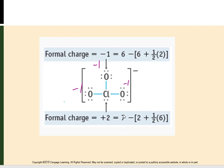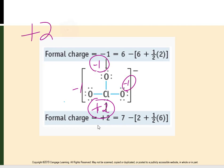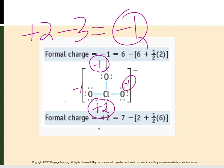Now for chlorine: 7 valence electrons minus 2 lone pair electrons, plus half of 6 bonded electrons (3 bonds to oxygen). So 2 + 3 = 5, and 7 minus 5 = +2. With a +2 on chlorine and three oxygens each at −1, that gives +2 minus 3 = −1 net ionic charge, which matches the ClO₃⁻ ion.